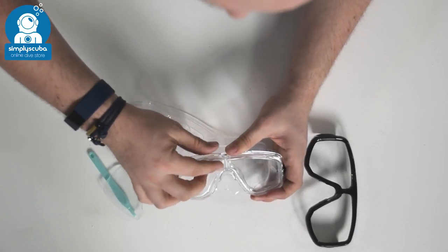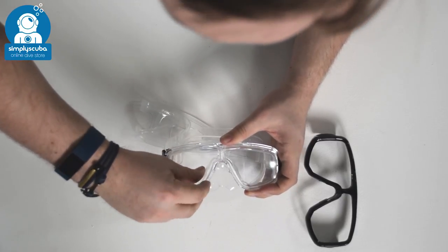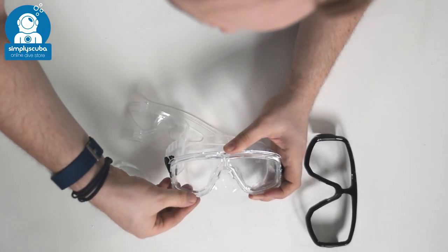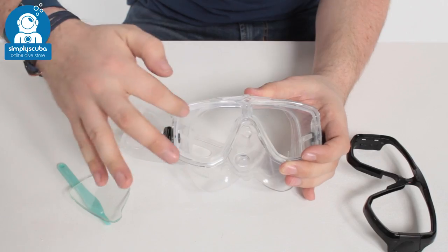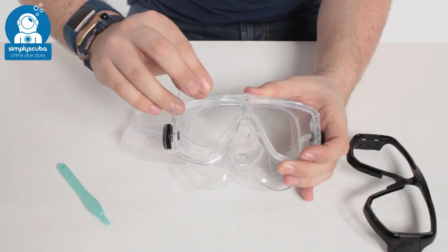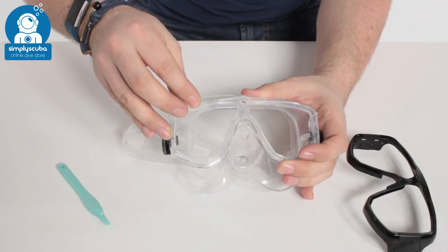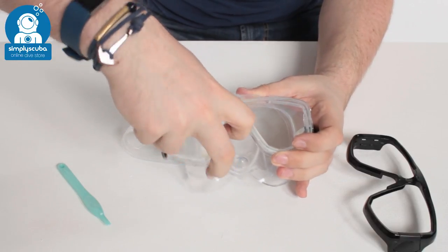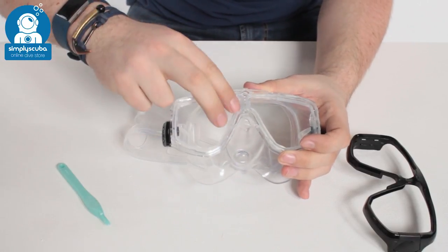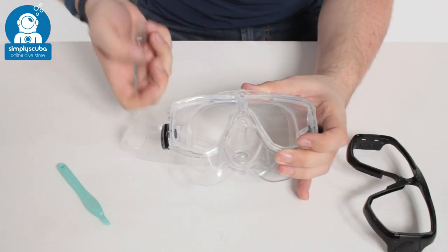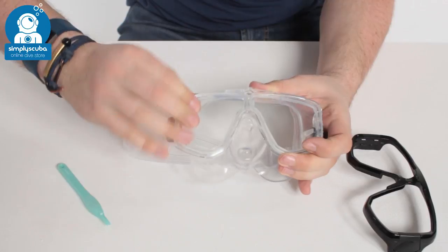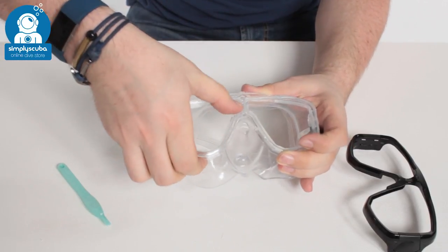So when that's nice and neat, get your replacement lens and you're just going to seat it back into that little recess. Make sure it's nice and square and none of the skirt is folded over anywhere. So this one's buckled up a little bit, pushing it in, make sure it's nice and flat, nice and square.